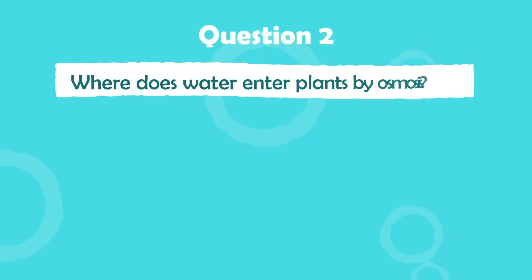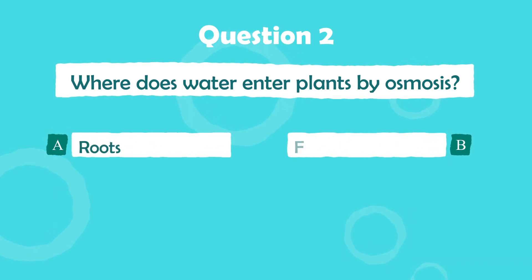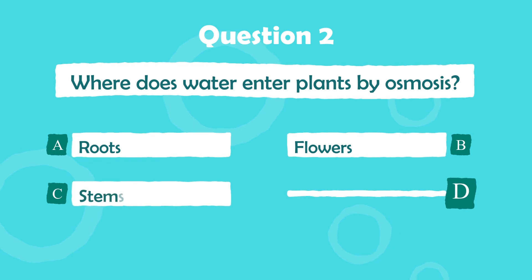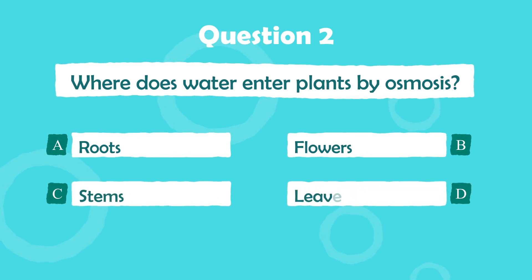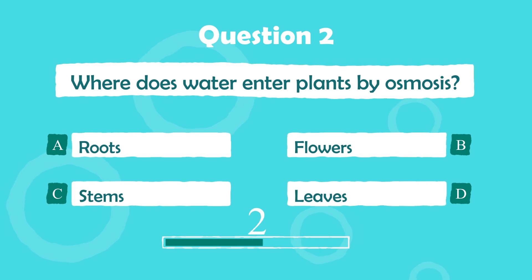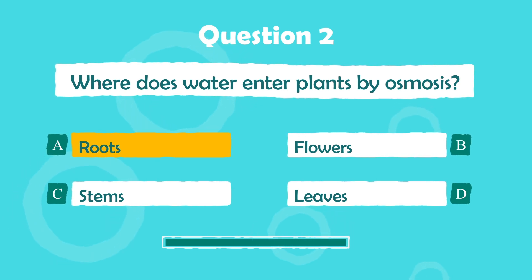Question number two: where does water enter plants by osmosis? Is it a) the roots, b) flower, c) stems, or d) leaves? The answer is a) the roots.